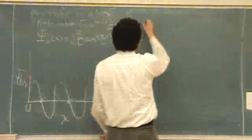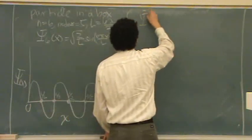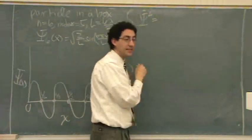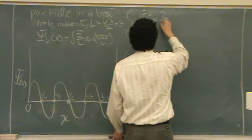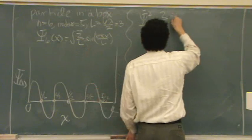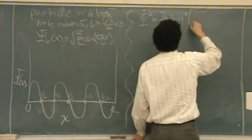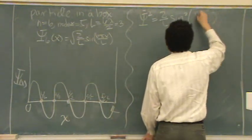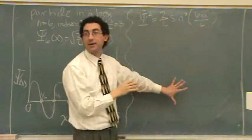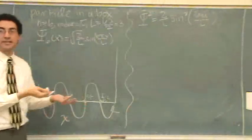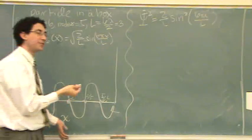The other part is psi squared. That's the probability density. Which means you have 2 over l. So, I'm just squaring that same function. Sine squared of 6 pi x over l. Again, if you graph this, you're going to get what I'm going to draw. But I'm going to do it by inspection.